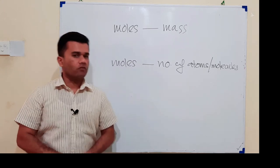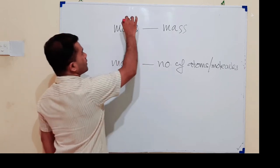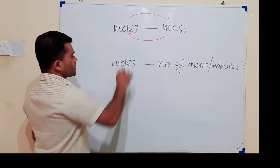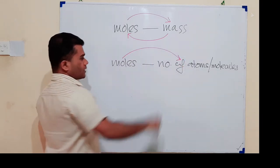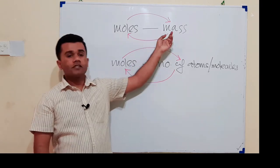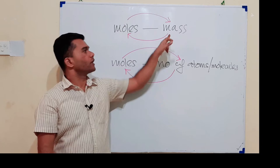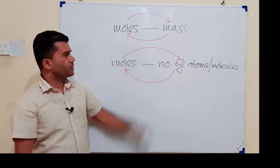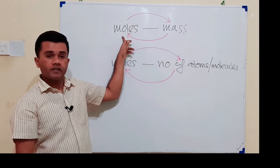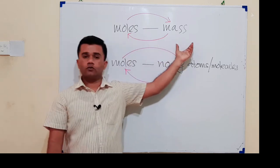So far we discussed two main relationships: moles and mass, and moles and number of atoms or molecules. Questions can go in any direction: moles given to find mass, mass given to find moles, moles given to find number of atoms/molecules, or number of atoms/molecules given to find moles. For combined questions — mass given, find atoms — first convert mass to moles, then moles to atoms. Or molecules given: first go to moles, then to mass.